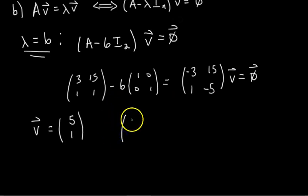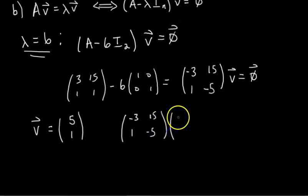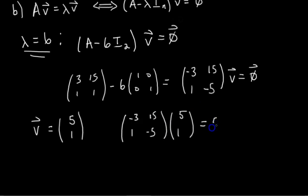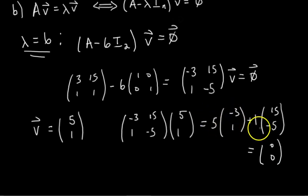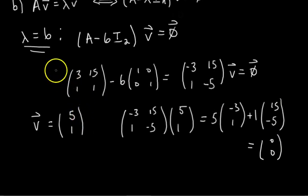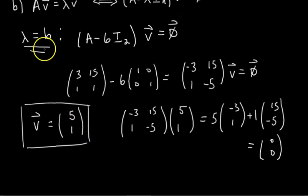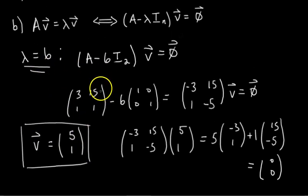To be clear: [-3, 1; 15, -5] times [5, 1] — this is 5 times [-3, 1] plus 1 times [15, -5], which equals [0, 0] because -15 + 15 = 0 and 5 - 5 = 0. So V = [5, 1] is an eigenvector with eigenvalue 6. Should we check that?